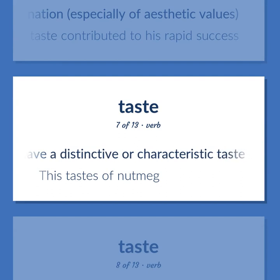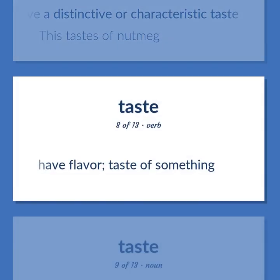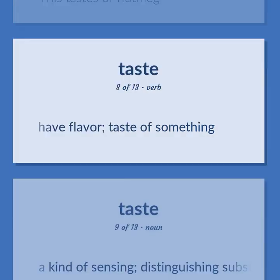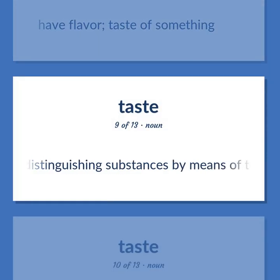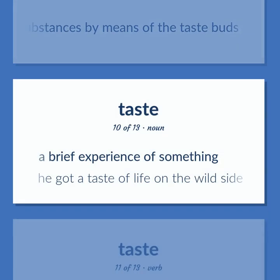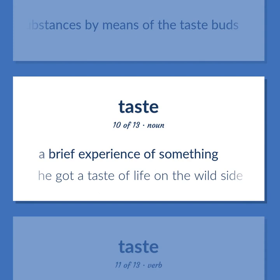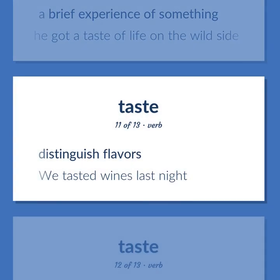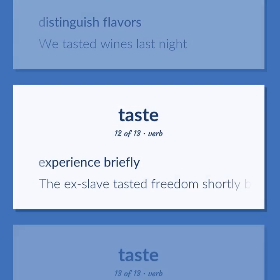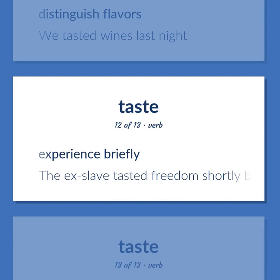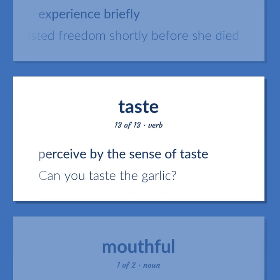Have a distinctive or characteristic taste. This tastes of nutmeg. Have flavor; taste of something. A kind of sensing, distinguishing substances by means of the taste buds. A brief experience of something. He got a taste of life on the wild side. Distinguish flavors. We tasted wines last night. Experience briefly. The ex-slave tasted freedom shortly before she died. Perceive by the sense of taste. Can you taste the garlic?